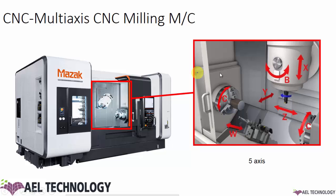In sophisticated machines like the Mazak Integrex, you can find two spindles — a lower turret and a machining head spindle that can be swung in one direction, move up and down, and also move in the Y direction. The machine has fully evolved, and I am sure you will find even more sophisticated machines in the future.